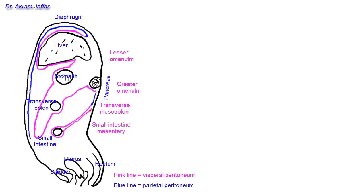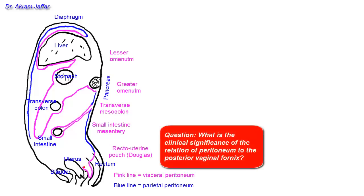At this point it comes back as parietal peritoneum, drawn in blue, continuing onto the pelvis. As it reaches the rectum it is reflected in front of the rectum as visceral peritoneum — the rectum has no mesentery. The peritoneum then dips into a pouch reflected from the rectum onto the posterior vaginal fornix and then onto the posterior wall of the uterus. This is the recto-uterine pouch or pouch of Douglas.